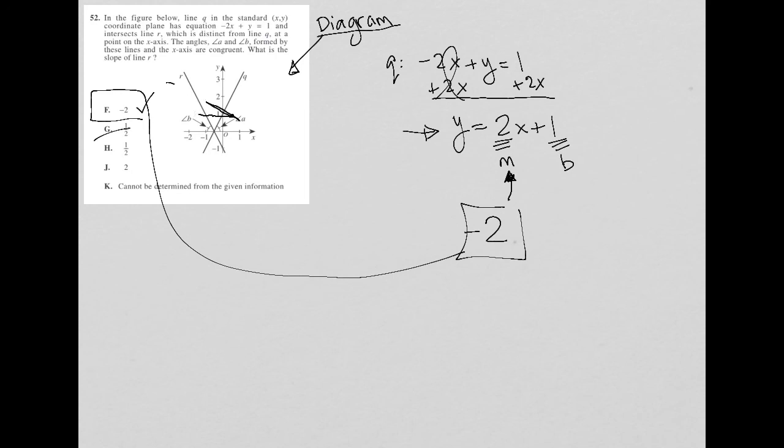And then, of course, line R definitely does not have a positive slope. So choice H and J are gone. And then cannot be determined from the given information, that's a tempting answer. But because of what I mentioned here, and because they did give us the graph, the graph is given information, so I could always just use the visual on finding the slope there. So K is out for that reason. So choice F is the best answer.